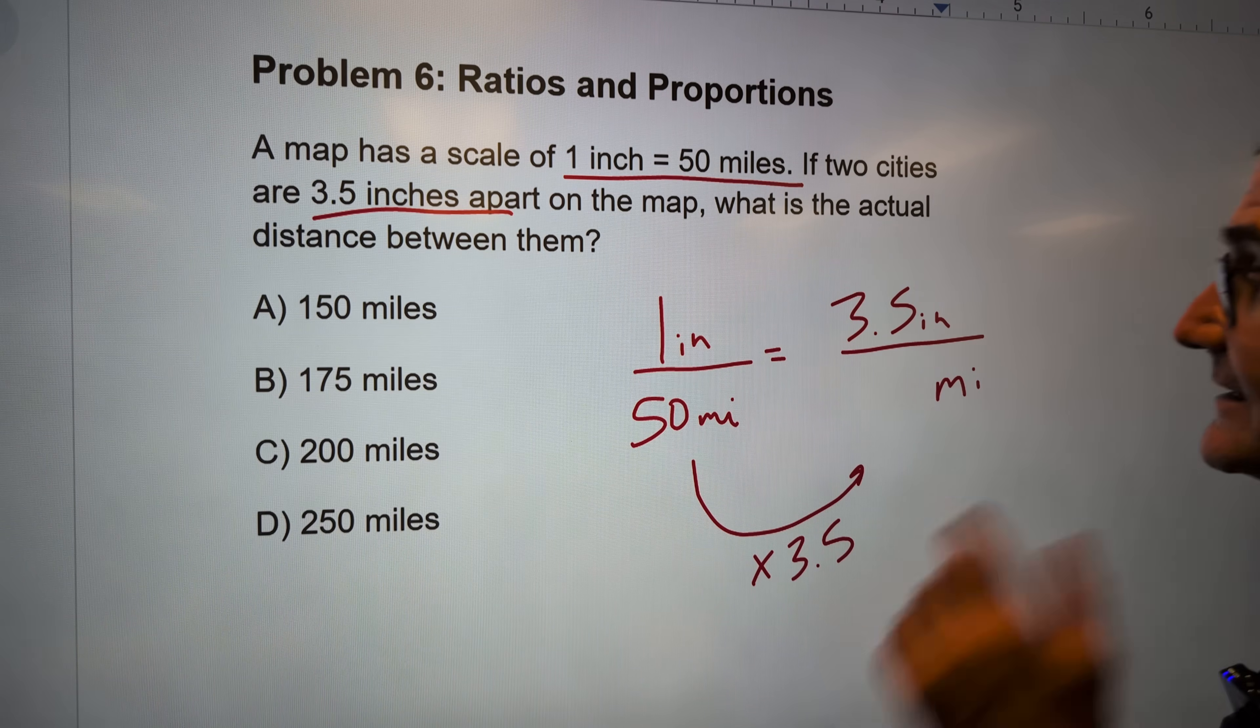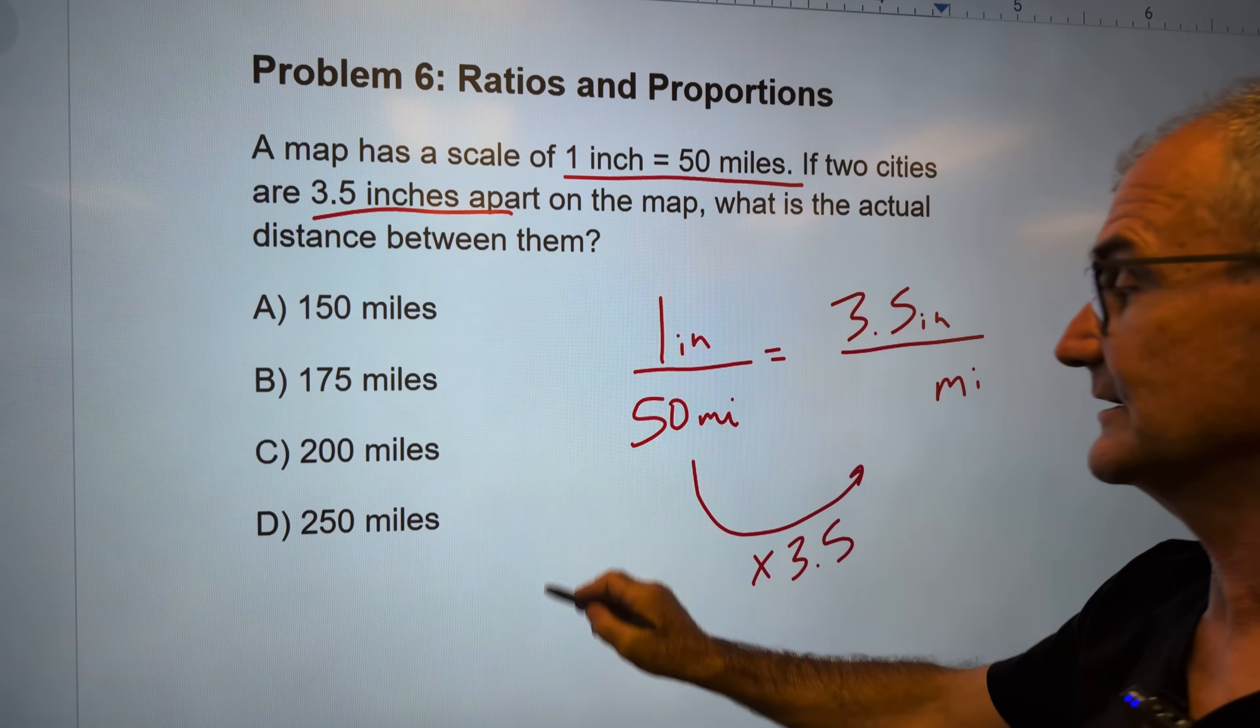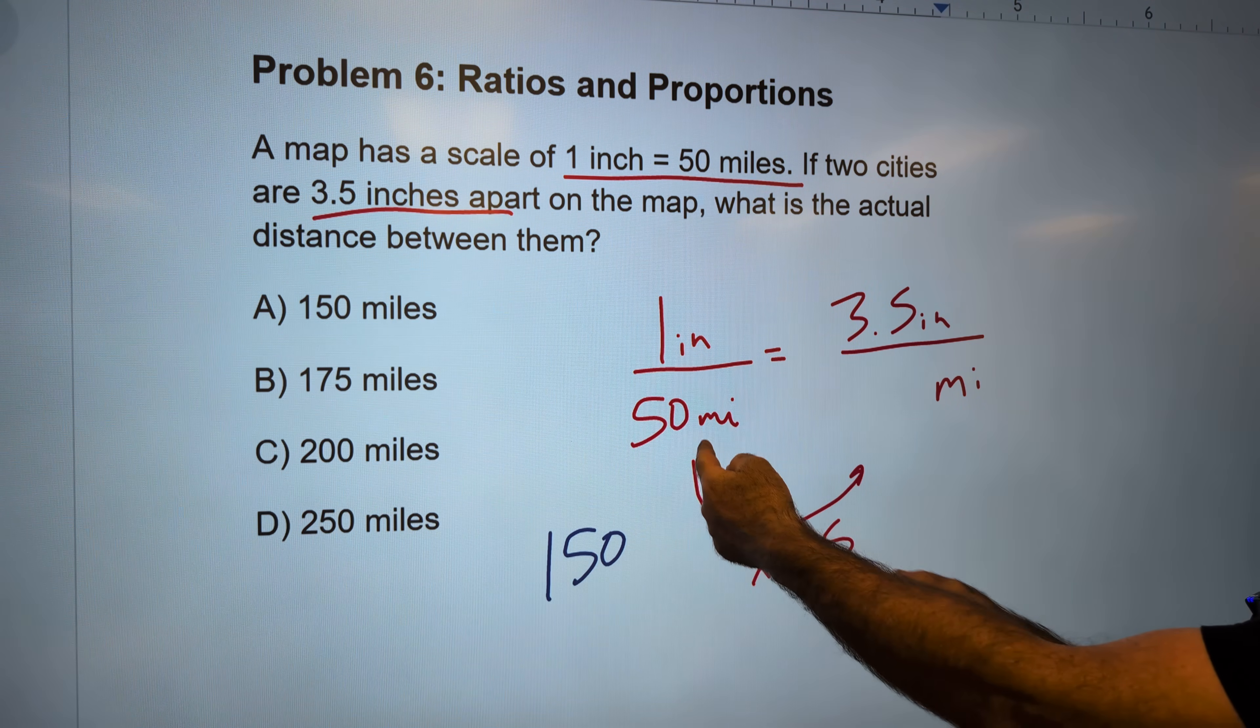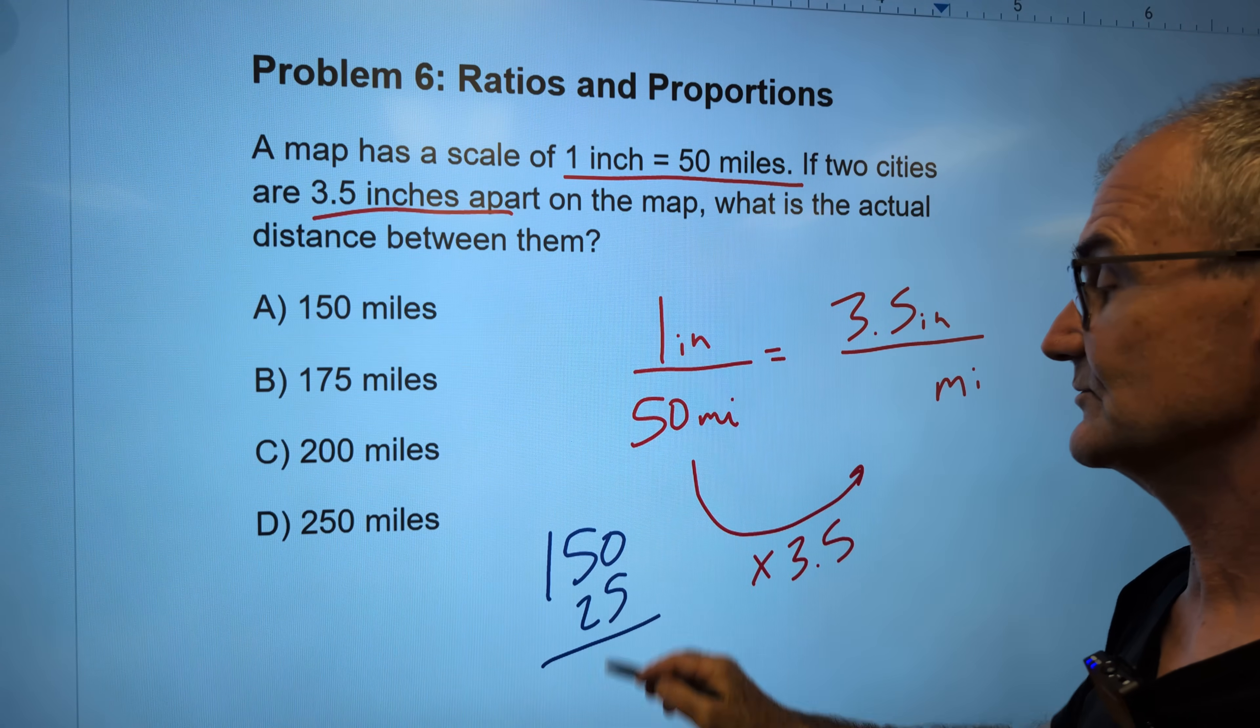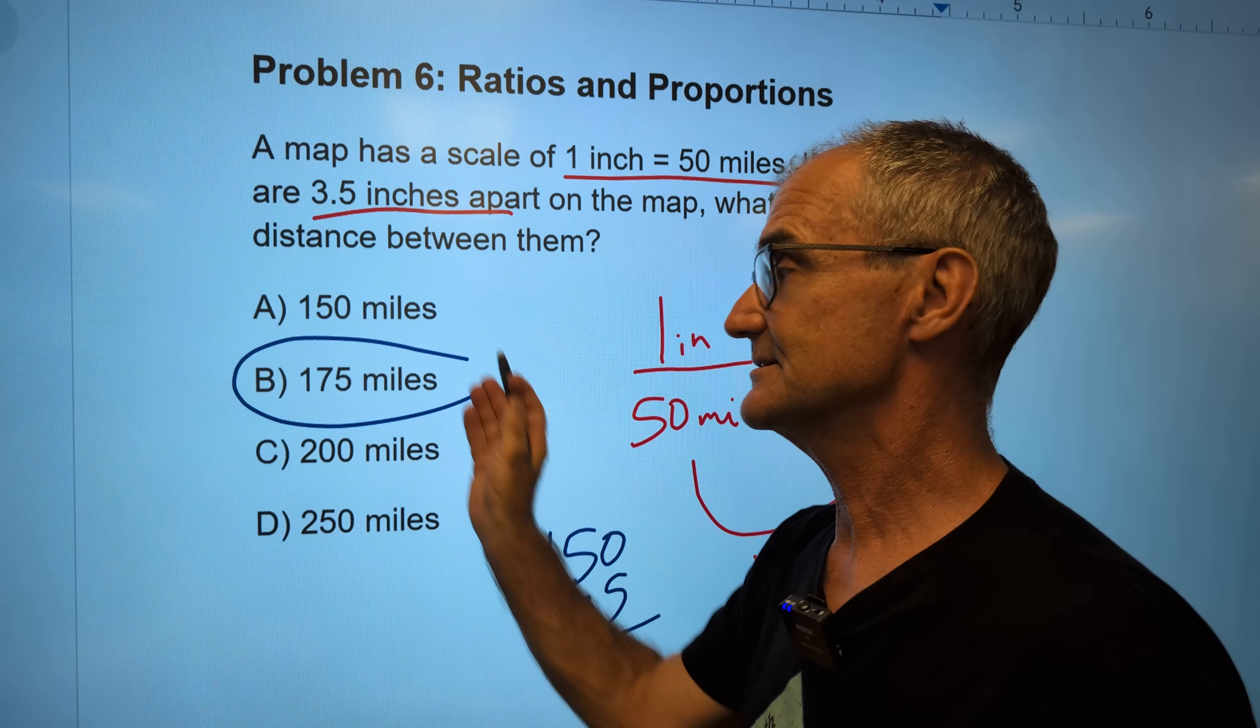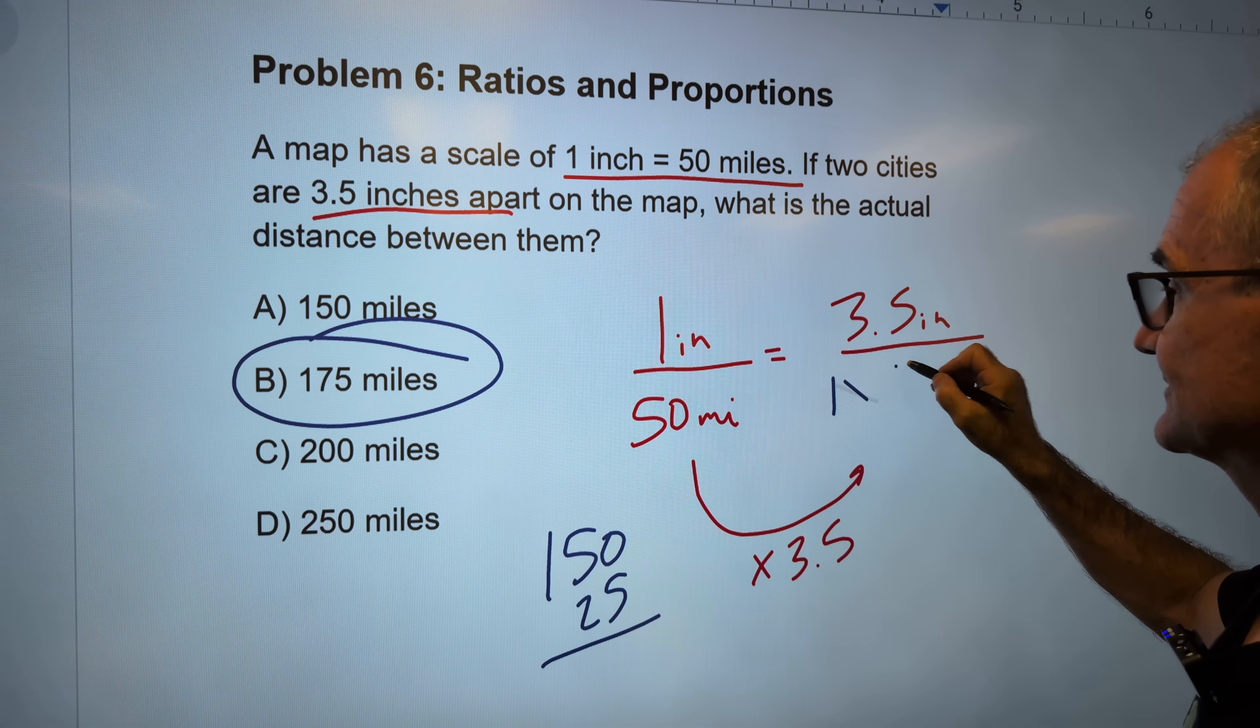I could do that in my head, like kind of breaking down this decimal. 50×3=150. 50×0.5, 50 times a half, what is half of 50? That's 25. 150 and 25 is 175. Correct answer, answer B right there.